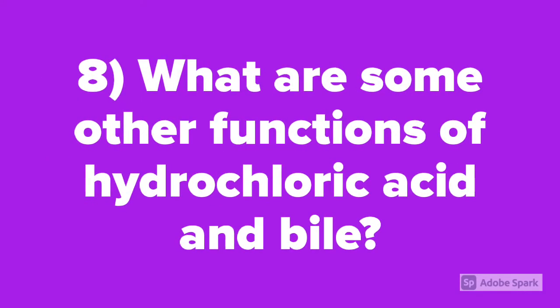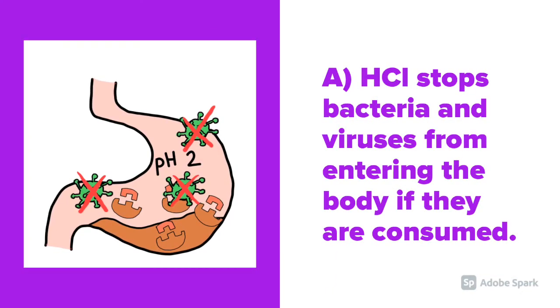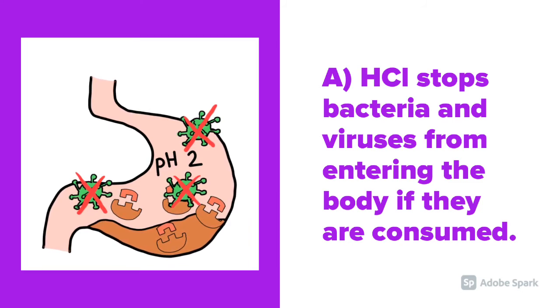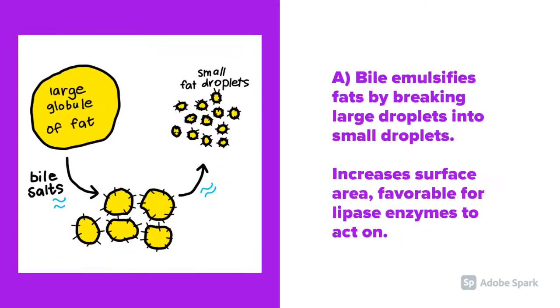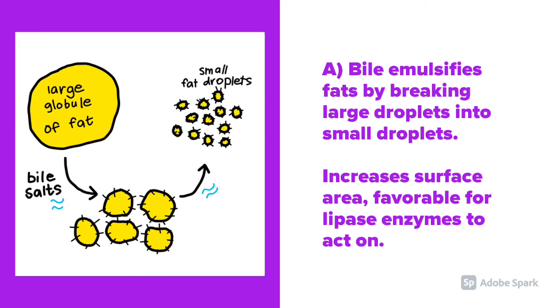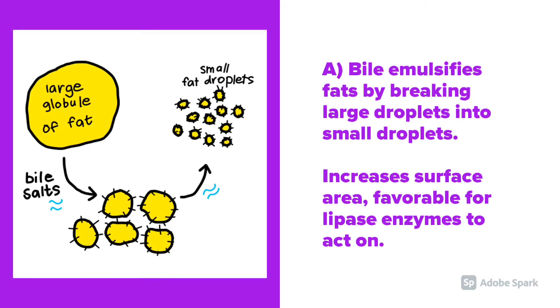Question number 8: What are some other functions of hydrochloric acid and bile? Hydrochloric acid stops bacteria and viruses from entering the body if they are consumed. Bile emulsifies fats by breaking large droplets into smaller droplets, which increases the surface area favorable for lipase enzymes to act on.